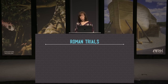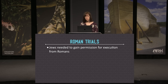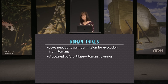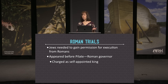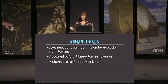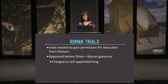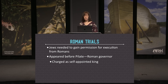The Roman trials begin because the Jews needed Roman permission for execution. He appears before Pilate, the Roman governor, and they now charge him as a self-appointed king — different from blasphemy — because Romans wouldn't care about someone claiming to be a god, but they would care about someone claiming to be king. Pilate could find nothing wrong and didn't want to deal with the situation, so he sent him to Herod, the Tetrarch of Galilee and Perea.